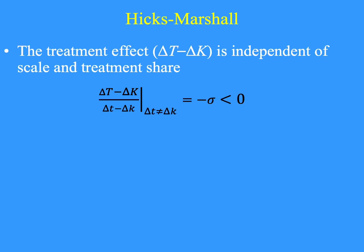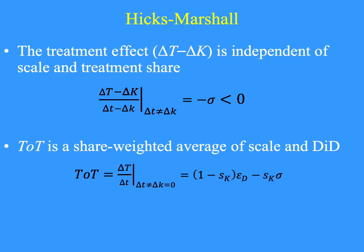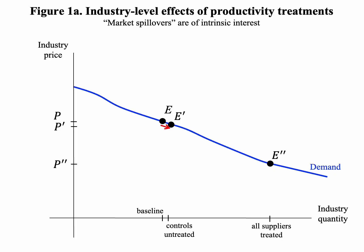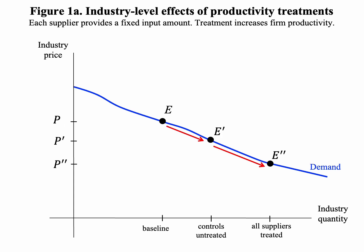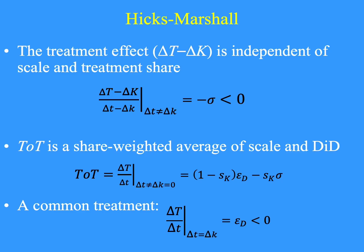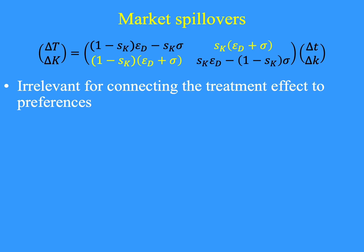Let's use the Hicks-Marshall laws derived in chapter 11. Recall that we used capital delta to indicate log changes. Our first result is that the treatment effect is just negative sigma. It has nothing to do with the expenditure share of the treated or the controls, and nothing to do with the scale effect. Our next result is that the TOT is a share-weighted average of scale and DID. Sigma and epsilon are the two foundations on which many TOTs can be built, depending on the share. As we increase the share treated, E-prime moves away from the baseline and toward E-double-prime.